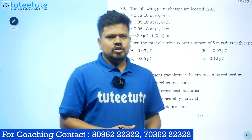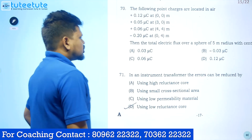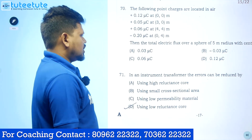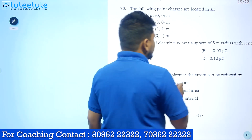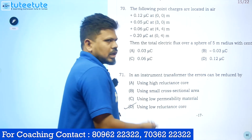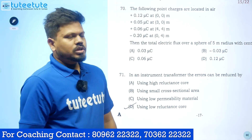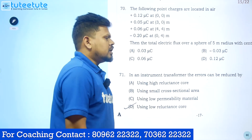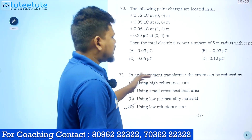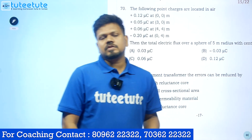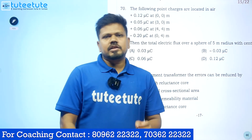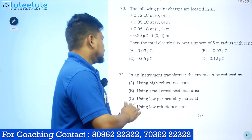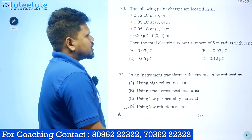The next question: in an instrument transformer, the errors can be reduced by? Instrument transformers means current transformer and potential transformer. The errors present are phase angle error and ratio error — these are the two most common errors.